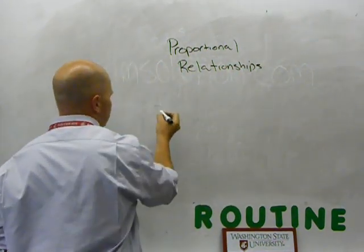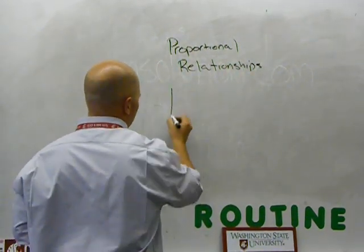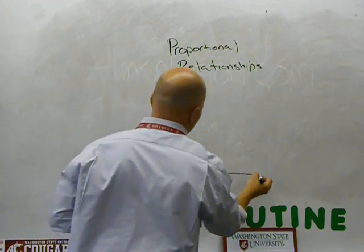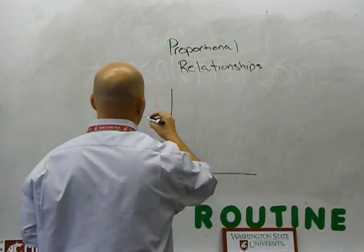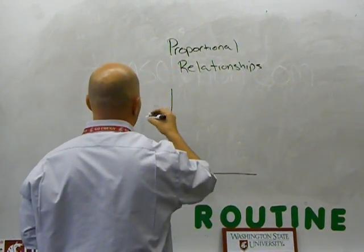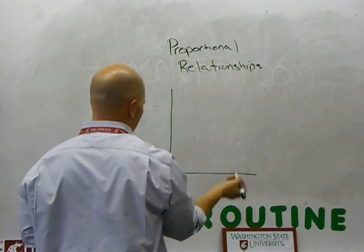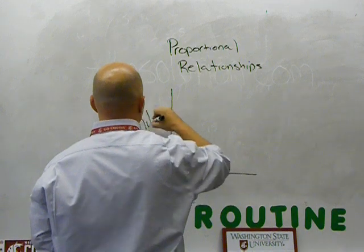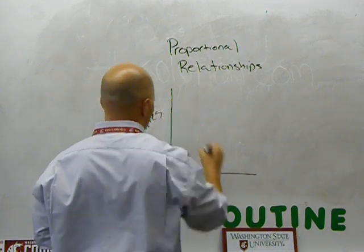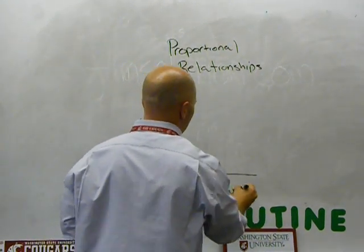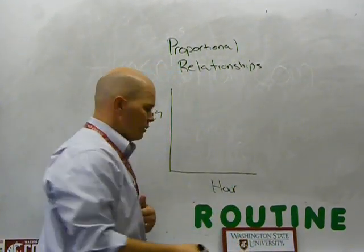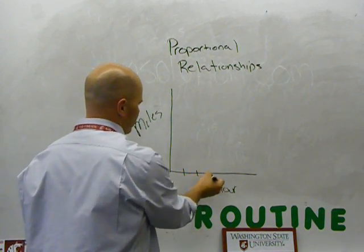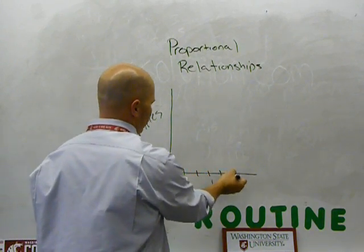So, let's take an example. We had a graph of a proportional relationship that looked at miles per hour. Down here we have time: one, two, three, four.